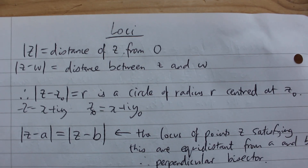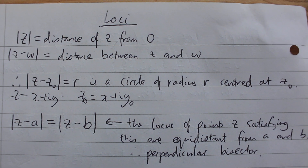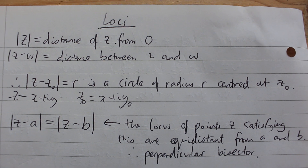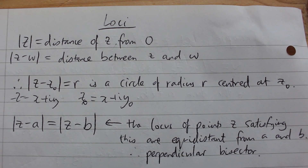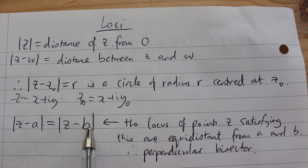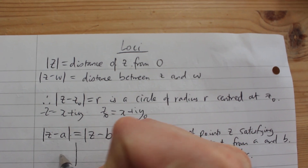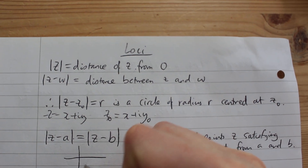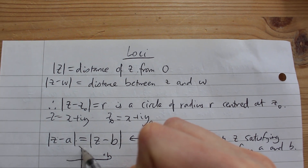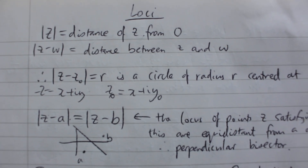If instead we have the modulus of z minus a equals the modulus of z minus b, this is the locus of points z which are equidistant from a and b — the distance of z from a equals the distance of z from b. So z has to be equidistant from the two complex numbers a and b, giving a line which is the perpendicular bisector of the segment ab.